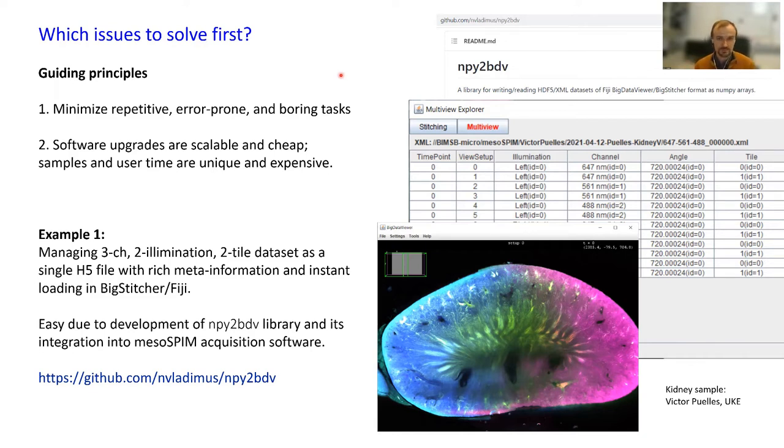One example of recent developments is a way to manage multiple channel, multiple illumination, multiple tile datasets in mesoSPIM. One option is to save every stack into its own file, but there's a more optimal way. I developed a library called npy2bdv which allows writing such multi-dimensional datasets into H5 format that is compatible and drag-and-drop ready for processing in Fiji BigStitcher. This is an example of such a dataset on the right, so you have a very user-friendly overview of your data and very responsive visualization even for very large datasets, hundreds of gigabytes.